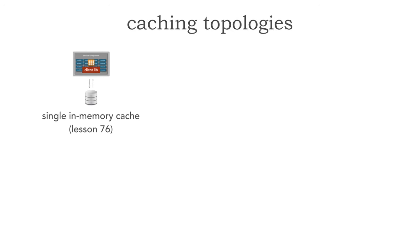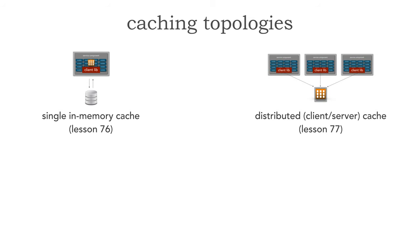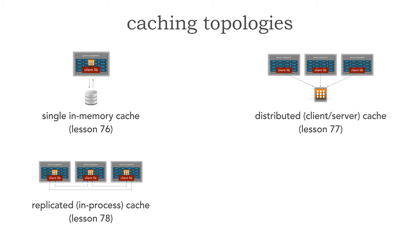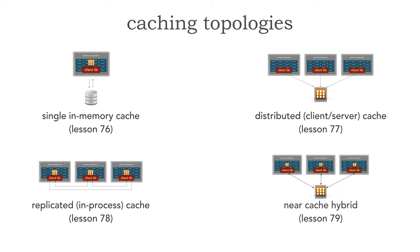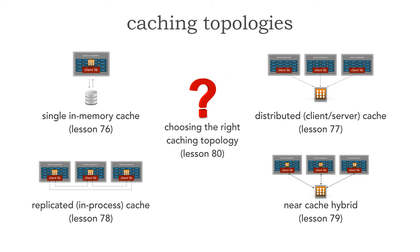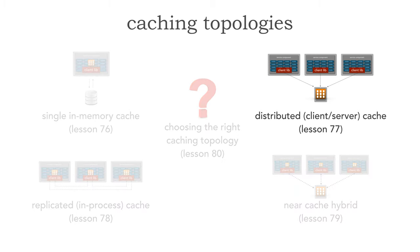As we saw in the last lesson number 76, we took a look at a single in-memory cache. We've also got a distributed or client-server cache option. The third option is to do replicated caching, and finally a near-cache hybrid which we'll look at in lesson 79. I'll tie all of these together in lesson 80 on choosing the right kind of caching topology. For this lesson, let's take a look in detail at distributed or client-server caching.